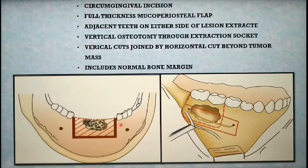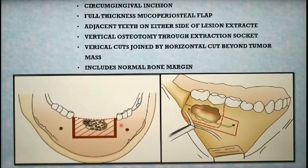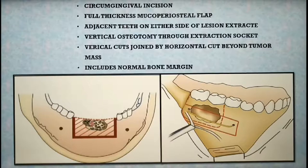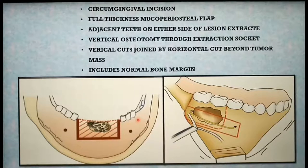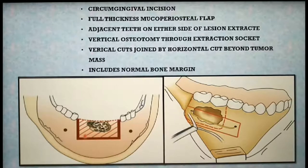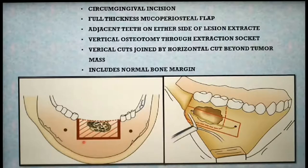Both vertical osteotomy cuts are extended from buccal to lingual cortices — a bicortical cut. The cuts are then joined with a horizontal osteotomy placed well beyond the tumor mass, including a margin of normal bone measuring approximately 0.5 to 1 cm depending on the histopathological nature of the lesion. Make sure the horizontal cut is also completed through both buccal and lingual cortices. The complete excision of the tumor along with some normal bone is carried out by osteotomy, and the teeth involved in the tumor mass are also removed. The remaining bony margins are then checked for sharp edges and contoured using round burs or a bone file.